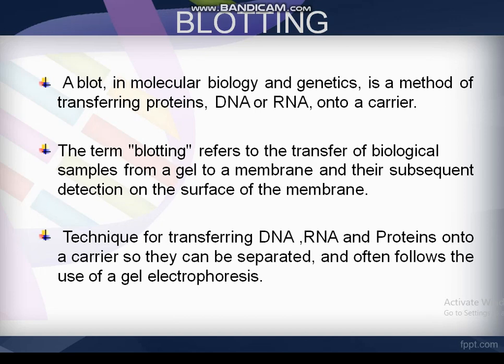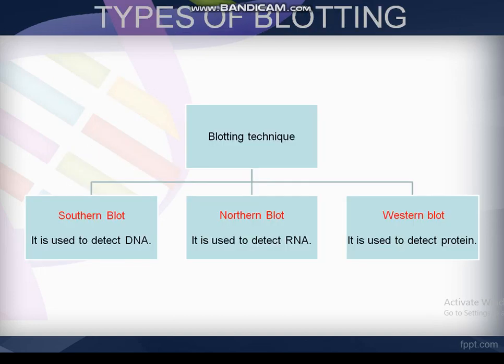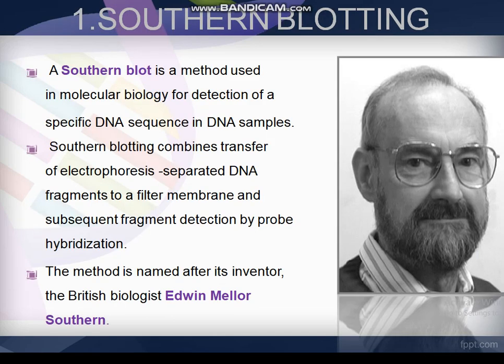Techniques for transferring DNA, RNA, and proteins onto a carrier often follow the use of gel electrophoresis. The different types of blotting techniques are southern blot, northern blot, and western blot. In southern blotting technique, it is used to detect DNA; northern blotting technique is used to detect RNA; and western blotting technique is used to detect protein.